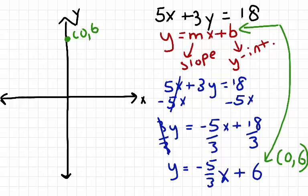Next, I'm going to use my slope, negative 5 thirds. We know this because it corresponds to m in our equation y equals mx plus b.